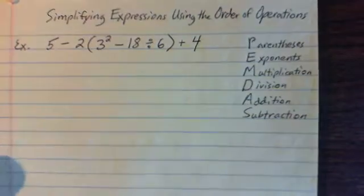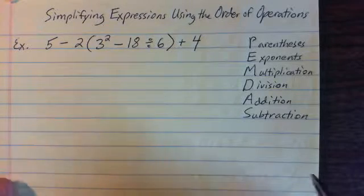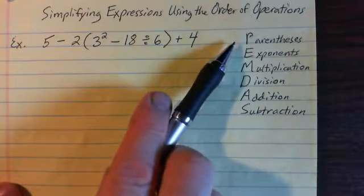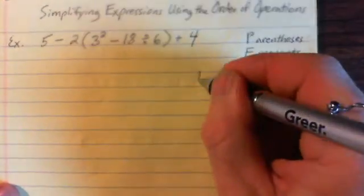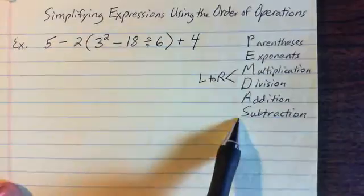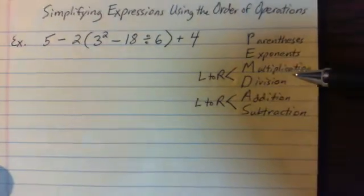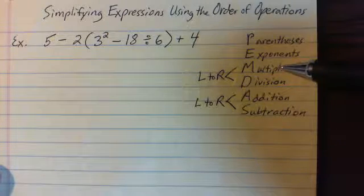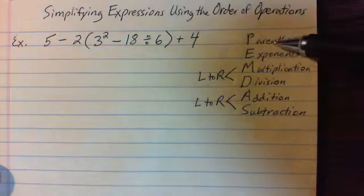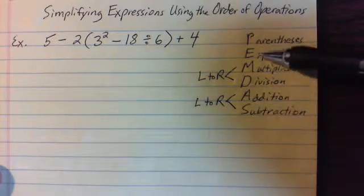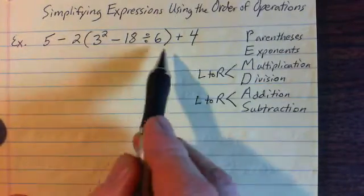This video talks about simplifying expressions using the order of operations. The order of operations is parentheses, exponents, multiplication or division whichever comes first from left to right, addition and subtraction whichever comes first from left to right. This is a little misleading because sometimes division will come before multiplication if it's first from left to right, and the same with subtraction and addition. Otherwise the order is PEMDAS — please excuse my dear aunt Sally.